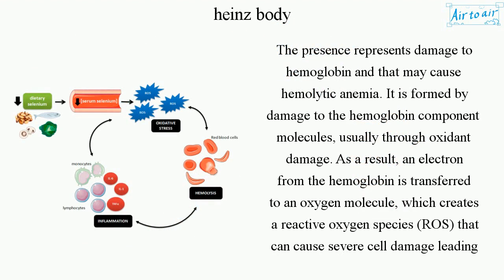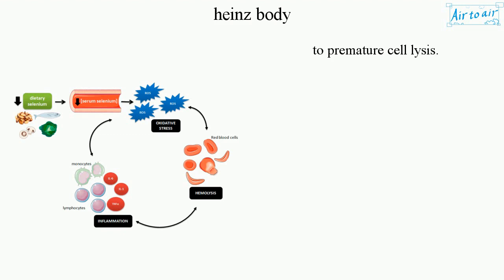The presence of Heinz bodies represents damage to hemoglobin and may cause hemolytic anemia. They are formed by damage to the hemoglobin component molecules, usually through oxidant damage. As a result, an electron from the hemoglobin is transferred to an oxygen molecule, which creates reactive oxygen species (ROS) that can cause severe cell damage leading to premature hemolysis.